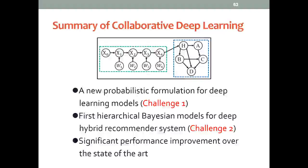To briefly summarize, we have designed a new probabilistic formulation for deep learning models and use it as our deep component for the Bayesian deep learning framework. It subsumes the deterministic deep learning model as a special case. We also have the first hierarchical Bayesian model for deep hybrid recommender systems, and we're the first to do this end-to-end. Experiments show that we can significantly outperform the state of the art.